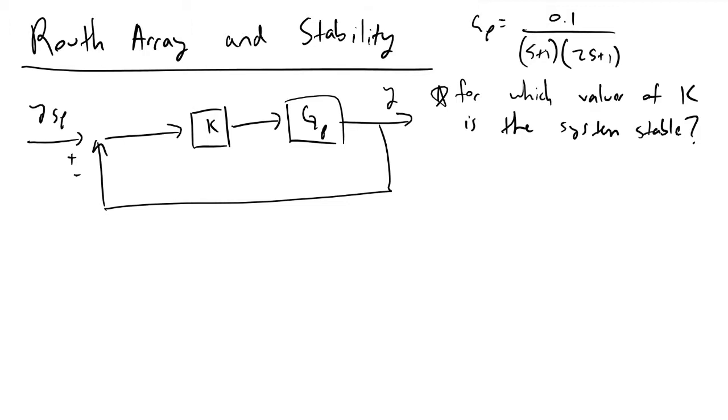The very first thing to start with is determining the closed-loop transfer function. Based on this control block diagram I have to the left here, our closed-loop transfer function is equivalent to Y, our output, over our input, our setpoint. This is equal to K times GP